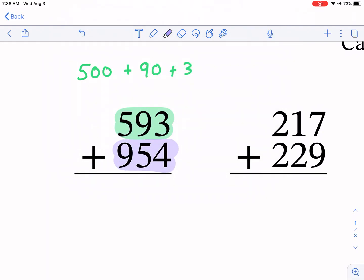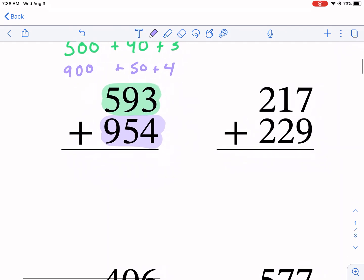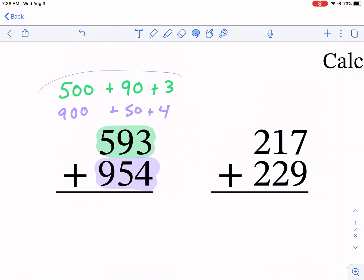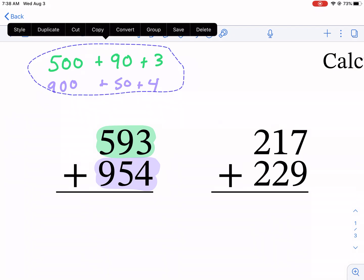The number beneath it, 954, is 900 plus 50 plus 4. If you add 3 plus 4, 90 plus 50, 500 plus 900, you'd get the same answer as beneath here. The standard algorithm takes care of that for you. I'm going to refer back to this to keep that in mind.